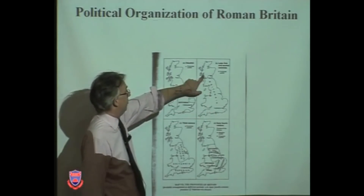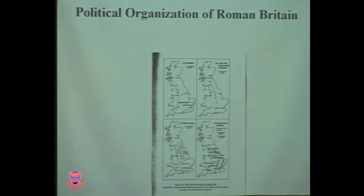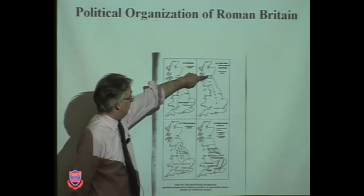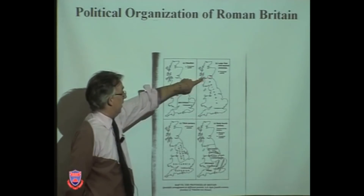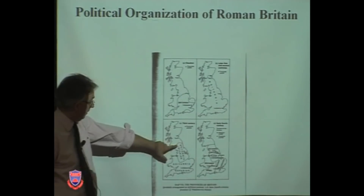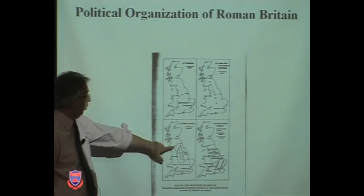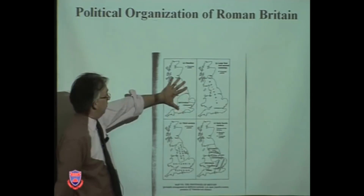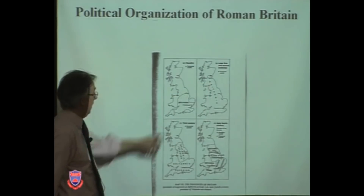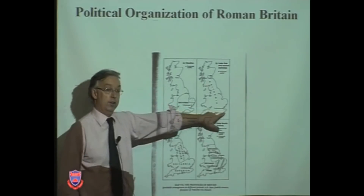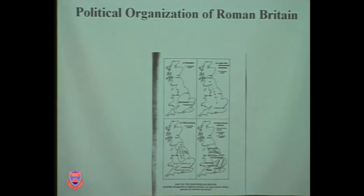Here's the situation around about 100, beginning of the 2nd century. For a while we have the Antonine Wall up here into Scotland, but eventually the traditional boundary back to Hadrian's Wall is pulled back. As you can see, at the beginning the Romans were based at Colchester, but shortly thereafter they shifted to London. London becomes the provincial capital, the capital of the province of Britannia.